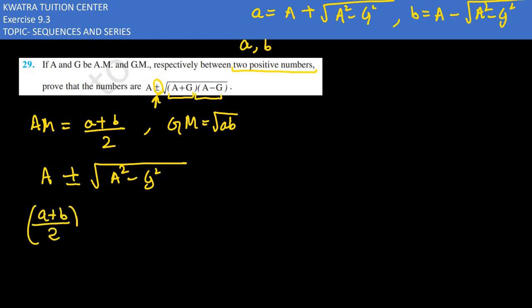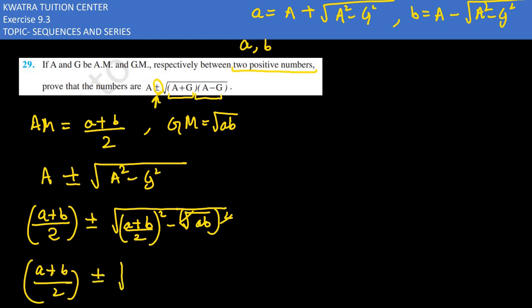So what will we do here? A plus b over 2 plus minus root A square. A square means what? A plus b over 2 whole square minus G square. So you write root ab square. Now here you have square root, so ab. Now the value we have is A plus b over 2 plus minus root.